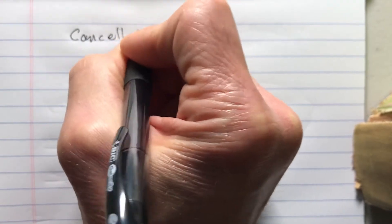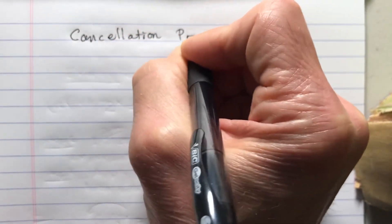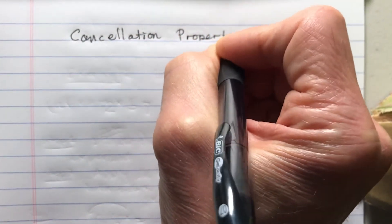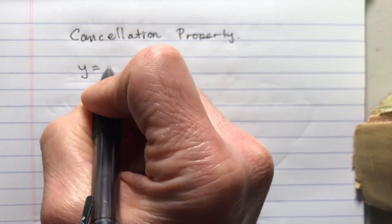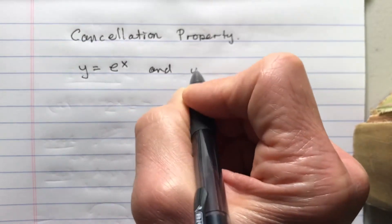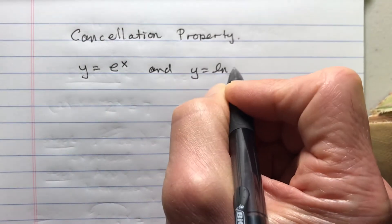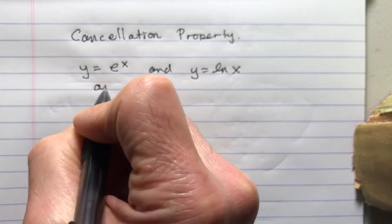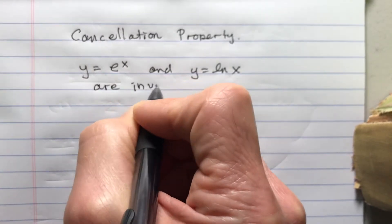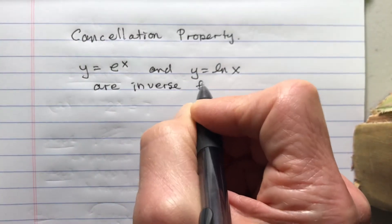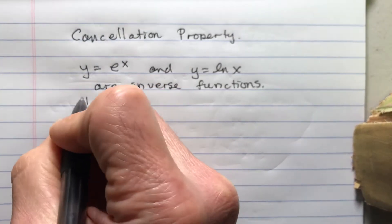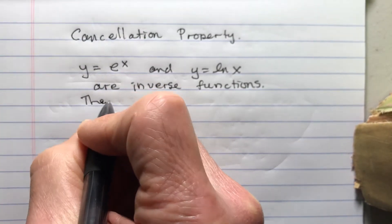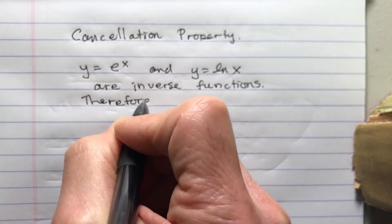All right, now I'm going to look at the cancellation property. So if I have y equals e to the x and y equals ln x, these are inverse functions. Therefore they cancel under composition. We use that if you have f inverse, the inverse function, you apply it to f, those cancel out.